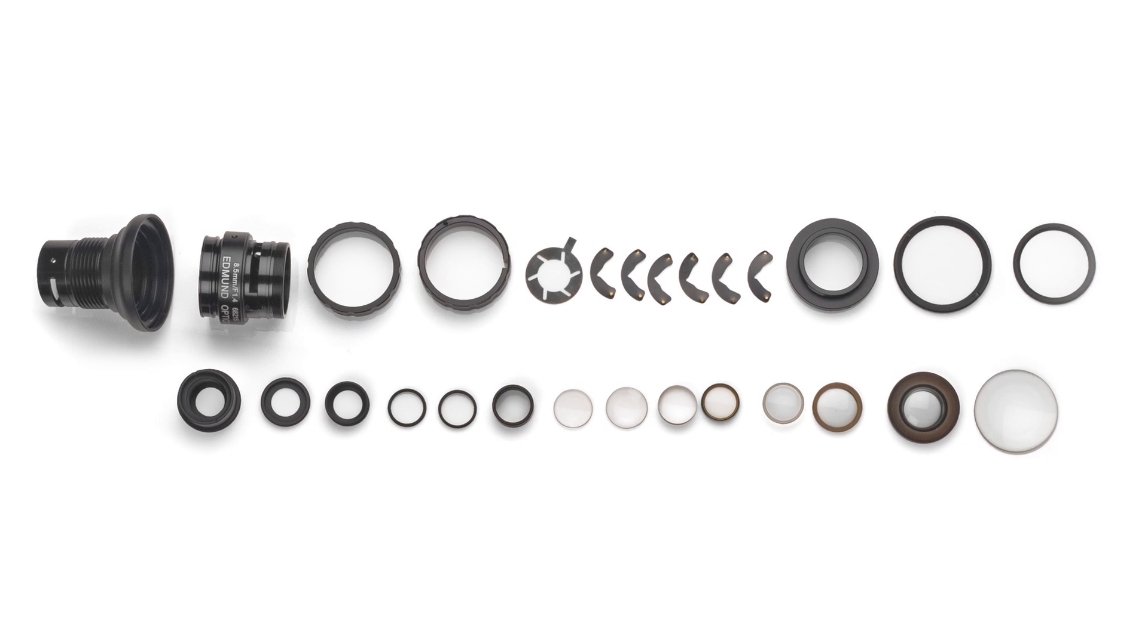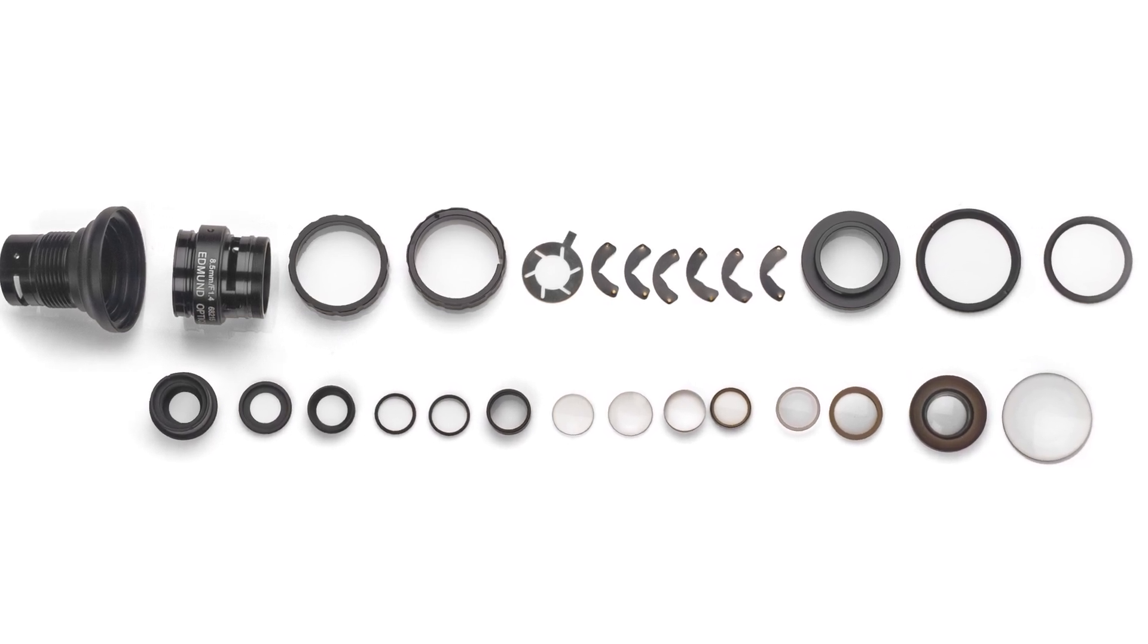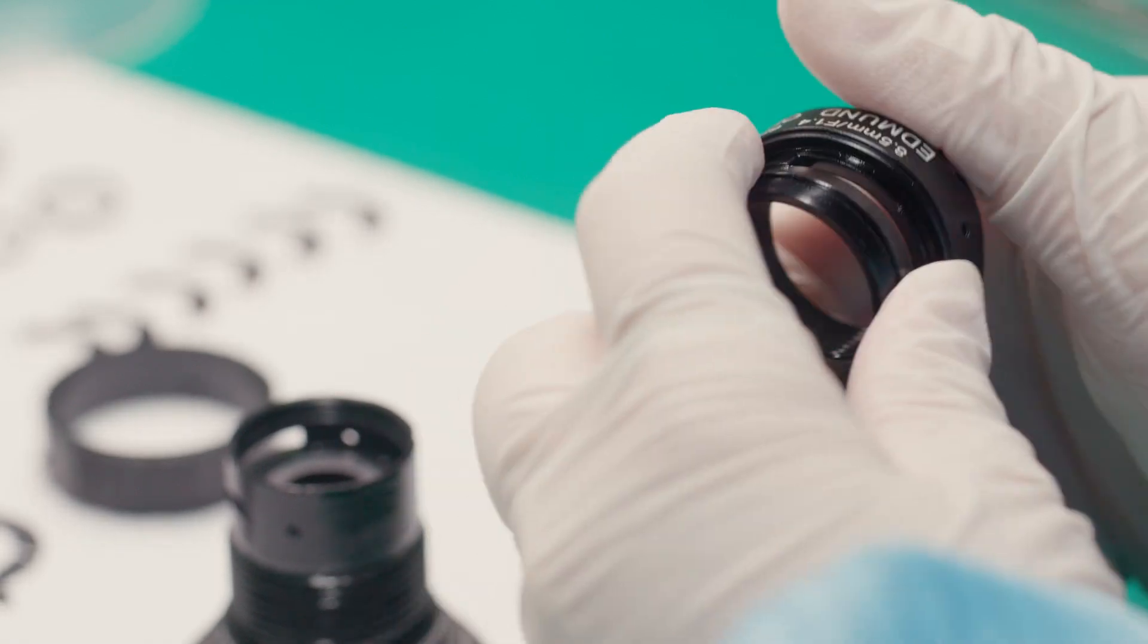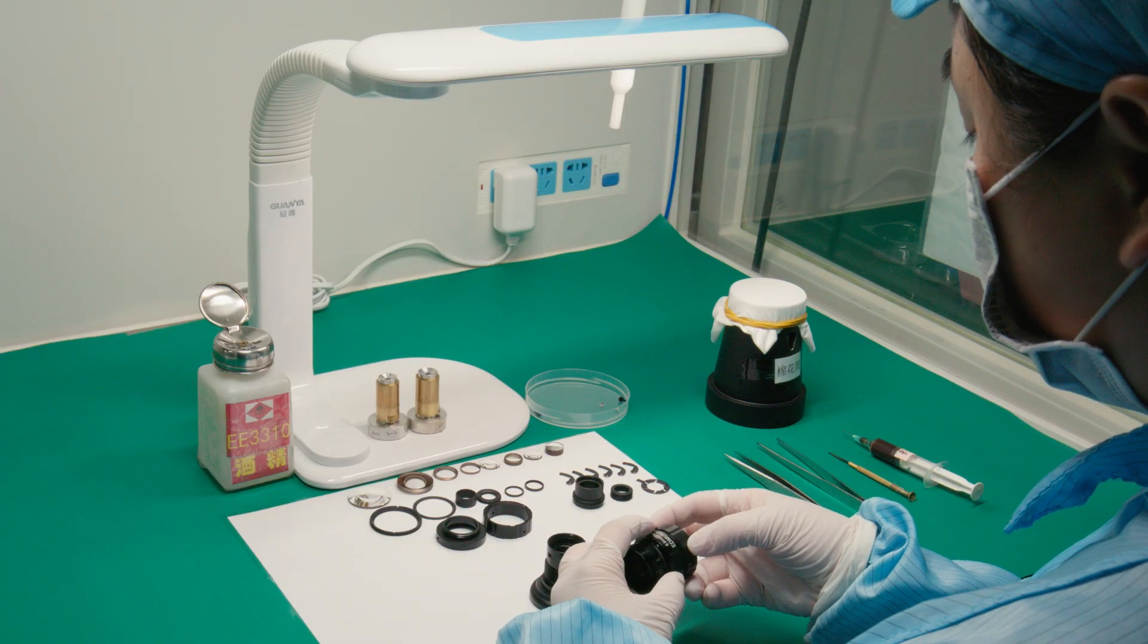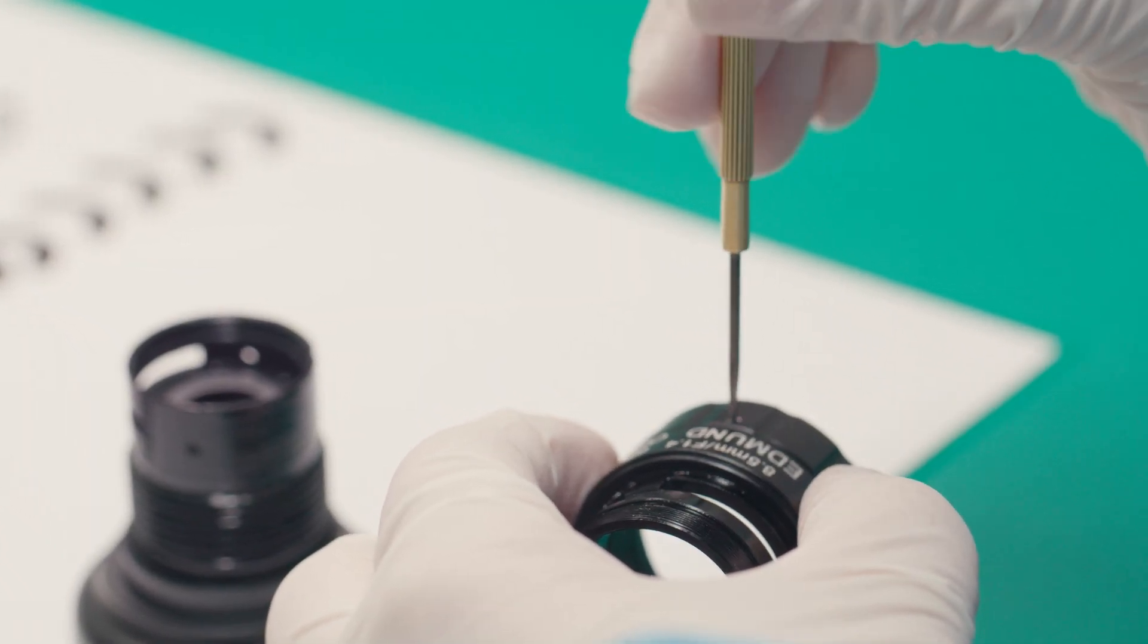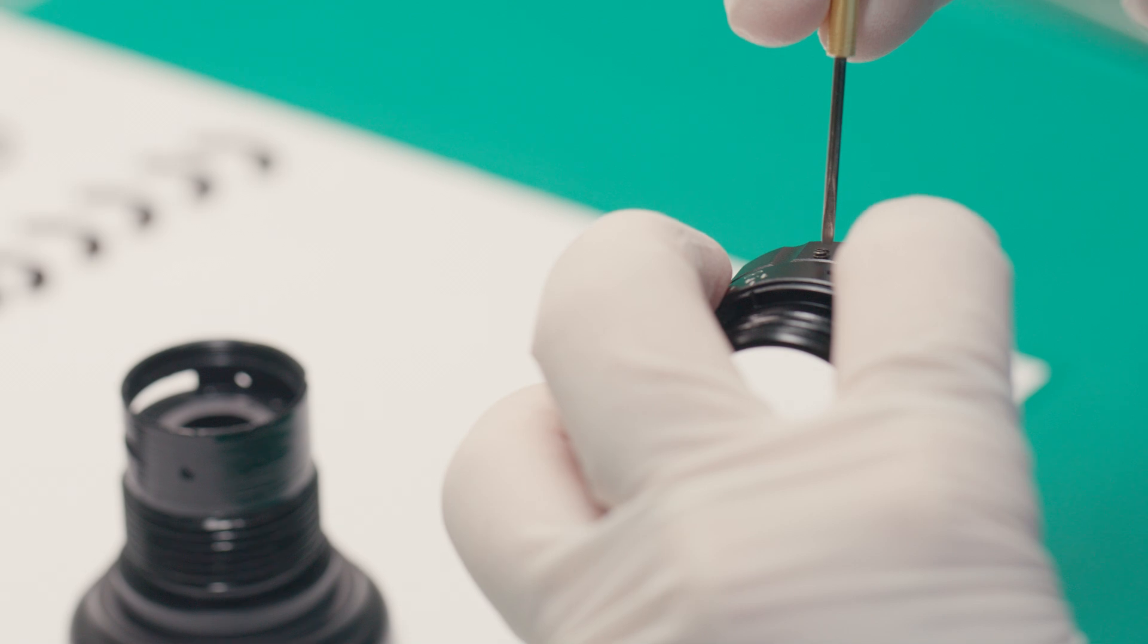Now, all components are ready to be assembled by a skilled technician. The multiple components of the helical focus mechanism are assembled together. Set screws and adhesives are used to affix the focus and iris barrels in place.